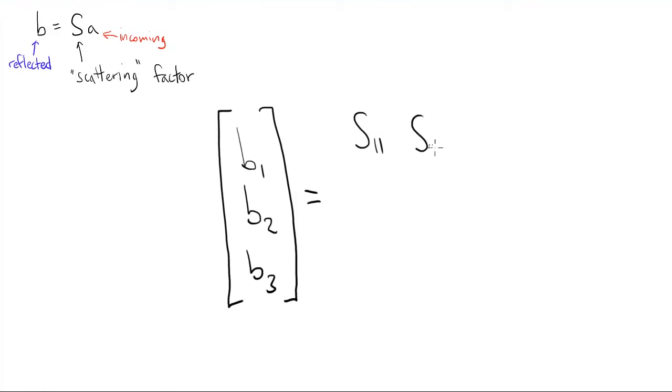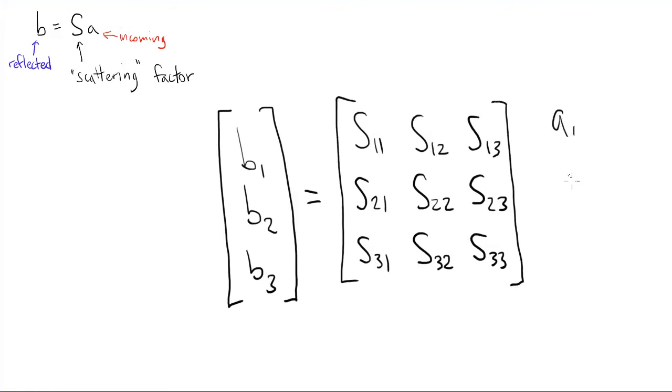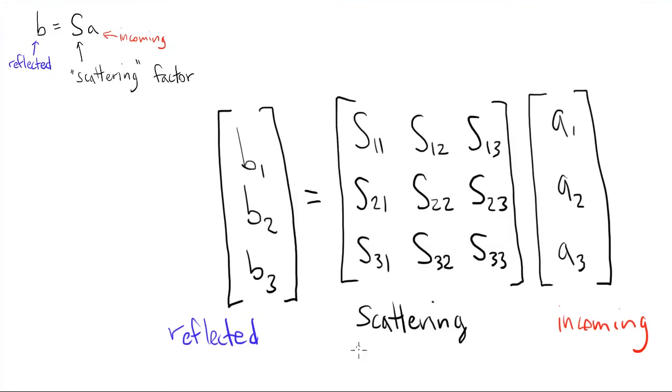Now we can extend this idea to a linear network with multiple ports. Instead of column vectors for I and V, we're going to make column vectors out of A's and B's. And the matrix, this time, is called the scattering matrix. And hence, that's why they're the S parameters.